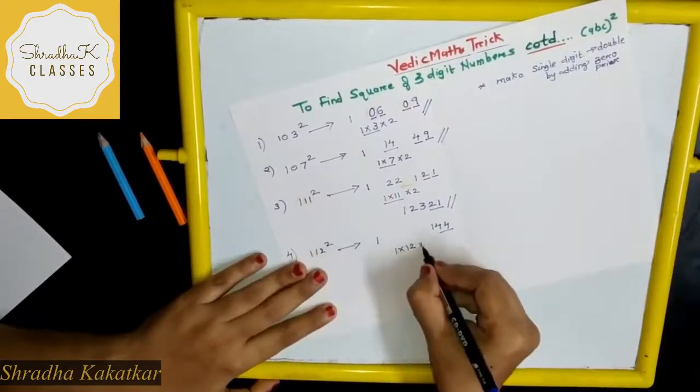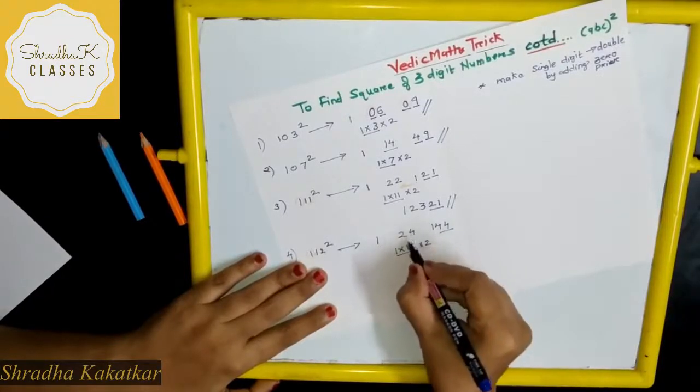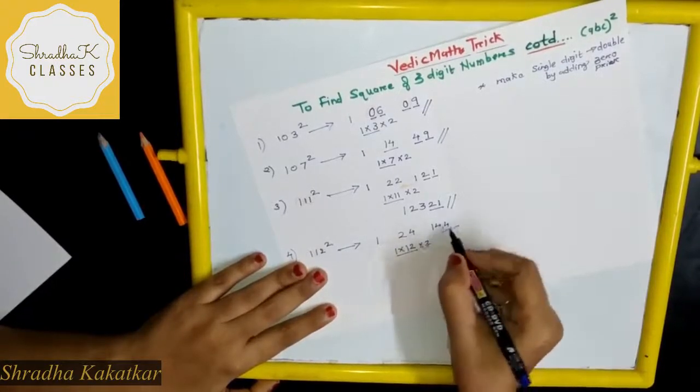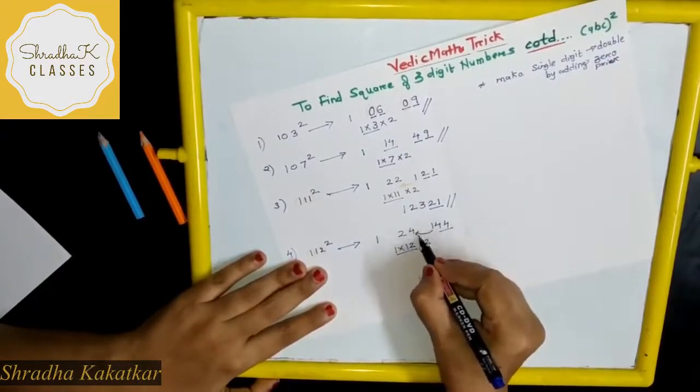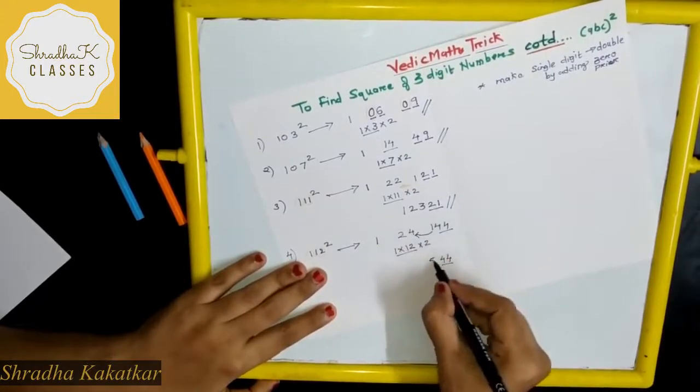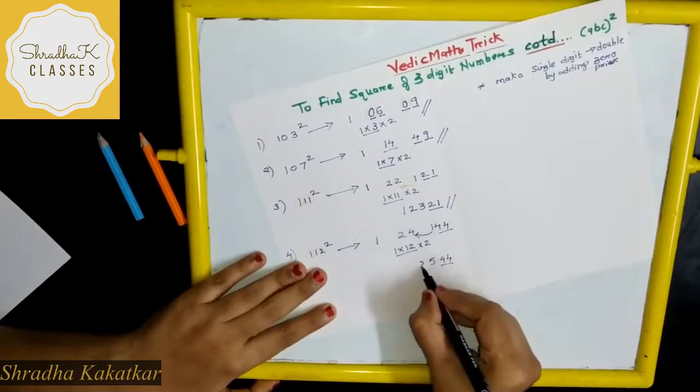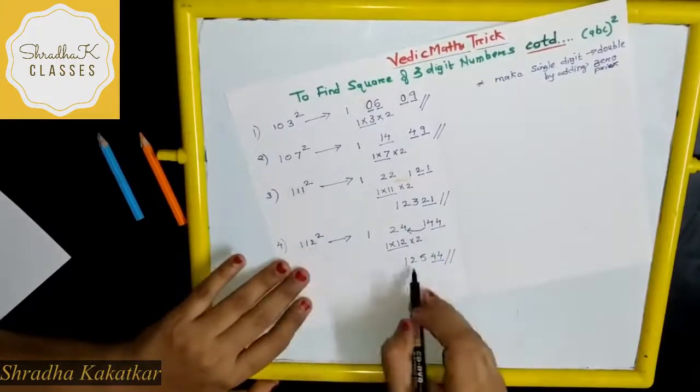Now 1 into 12 into 2, so 12 into 2 is 24. We got 2 digits, but here we have 3 digits, so we have to carry forward this 1 to this 4. So write 44. Then this 1 plus 4 is 5. Then this 2 and this 1. So this is the final answer for 112 square. I hope you understood this.